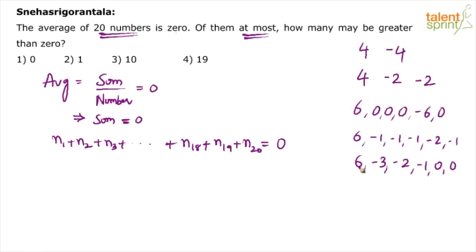For the sum to be 0, a few numbers have to be negative, and at least one number has to be positive. At least one has to be positive and at least one has to be negative — both ways it works. The question asks: maximum how many may be greater than 0? In the examples we've seen, only one was greater than 0, but we need to find the maximum possible.